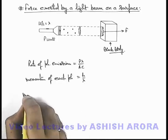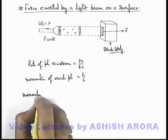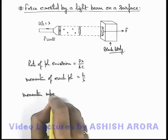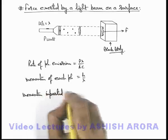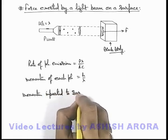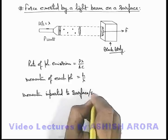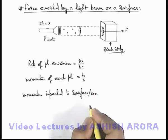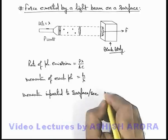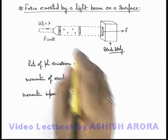Now if we calculate the momentum imparted to the surface per second, the momentum imparted per second can be written as a force exerted on the body which is due to the absorption of continuous momentum.